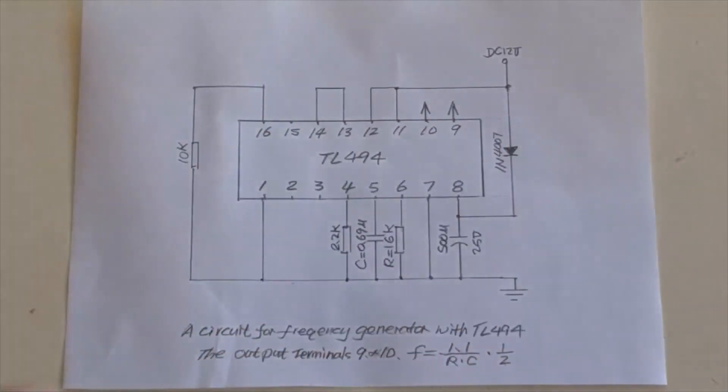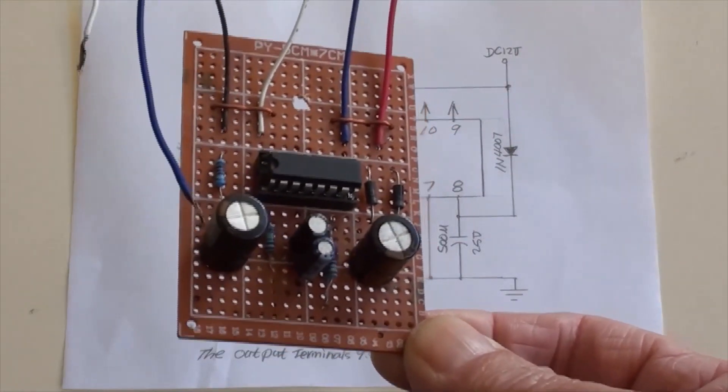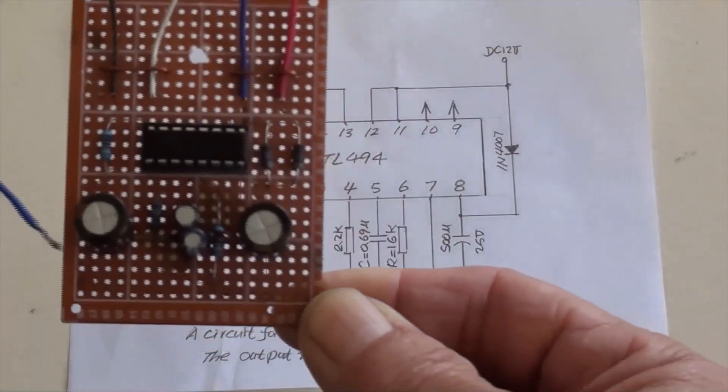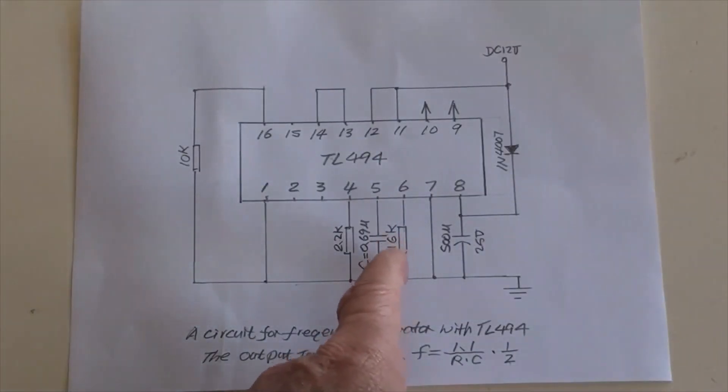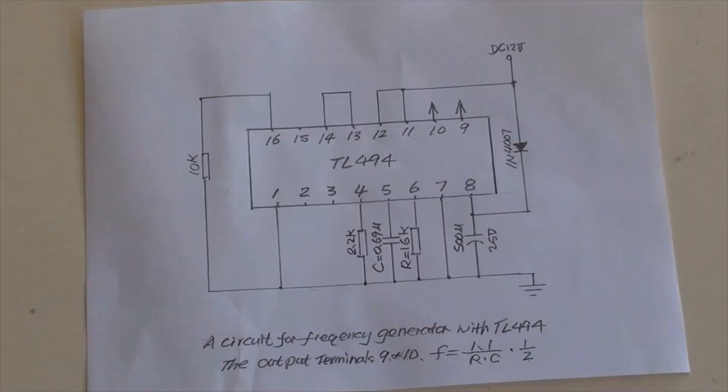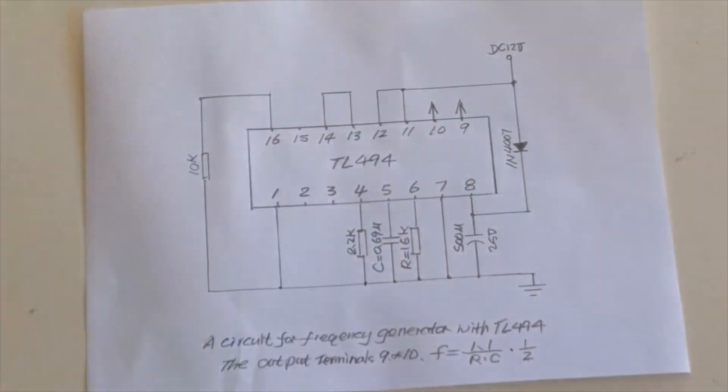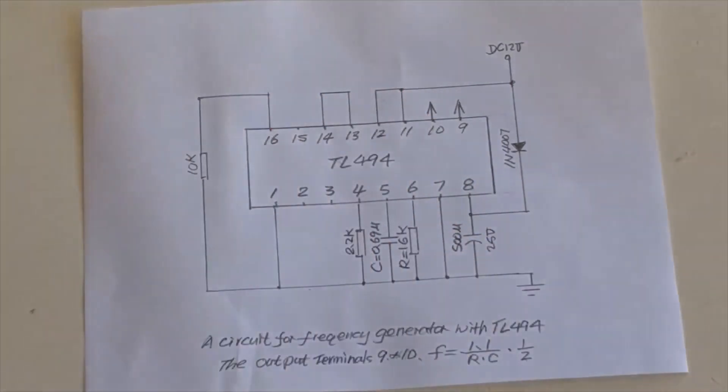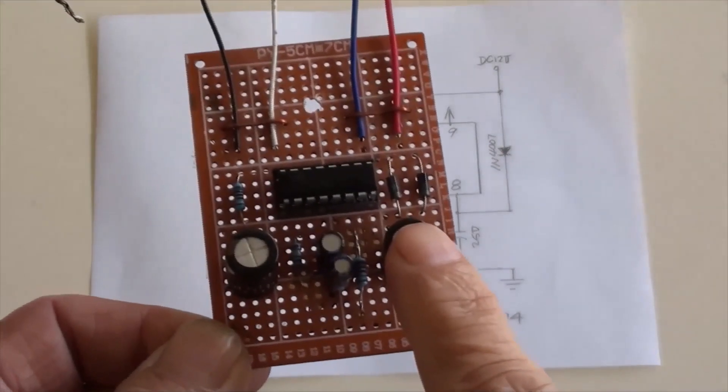This is the IC chip of TL494. That is the 10k ohms resistor. These are the capacitors with a value of 0.69 microfarads combined. That is the 16k ohms resistor. The 2.2k ohms resistor is right over here. Two diodes of 1N4007 are used here instead of one.